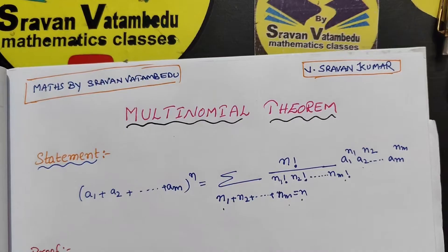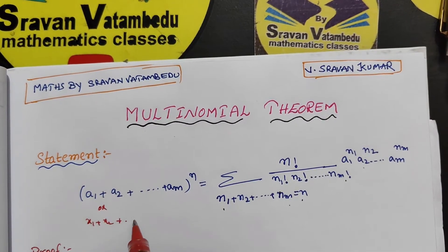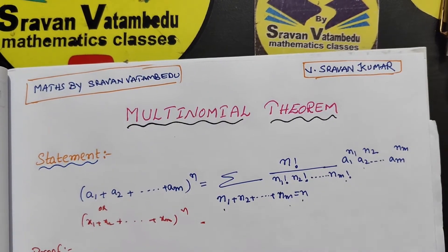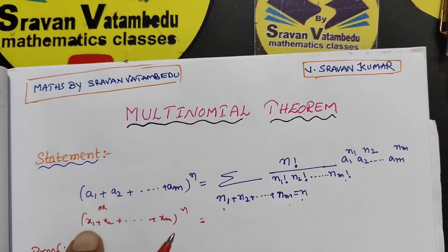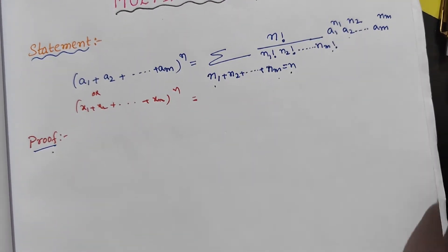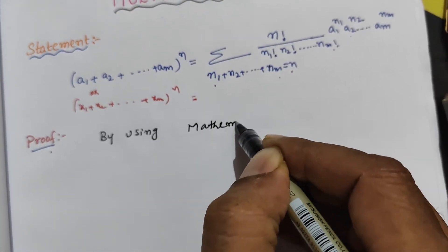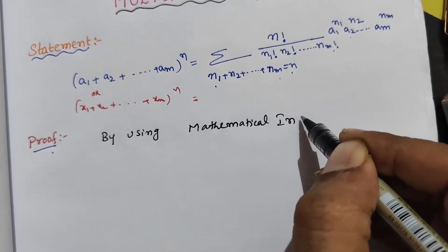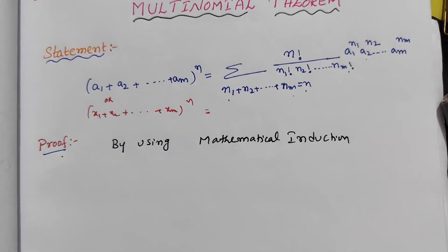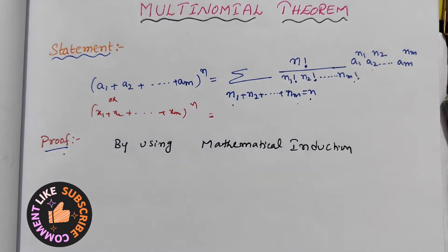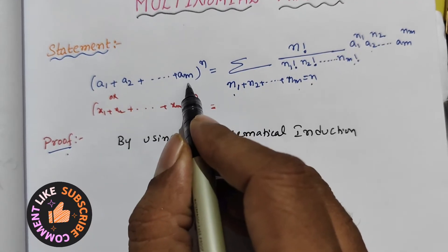We have to prove (x1 + x2 + ... + xm)^n, showing the expansion involves terms x1^n1 · x2^n2 · ... · xm^nm. We will prove this using mathematical induction. In mathematical induction, first we show n=1 is true, then assume m=K is true, then show m=K+1 is true, and we can say the statement is true for all values of n.